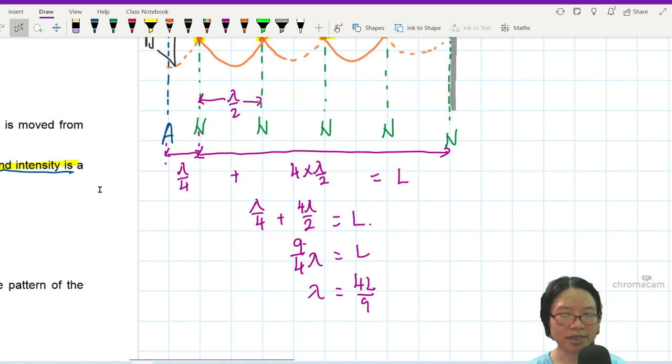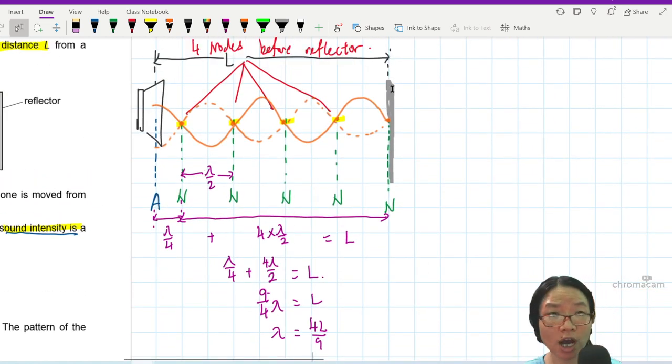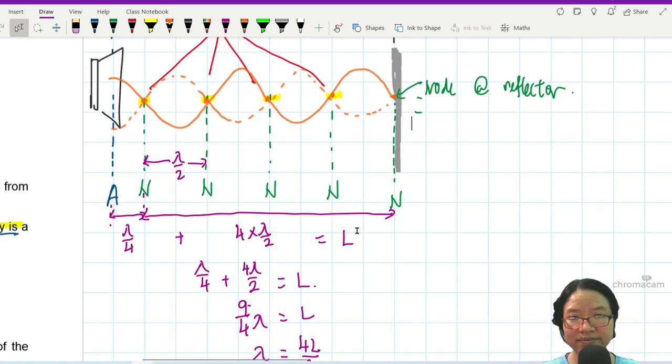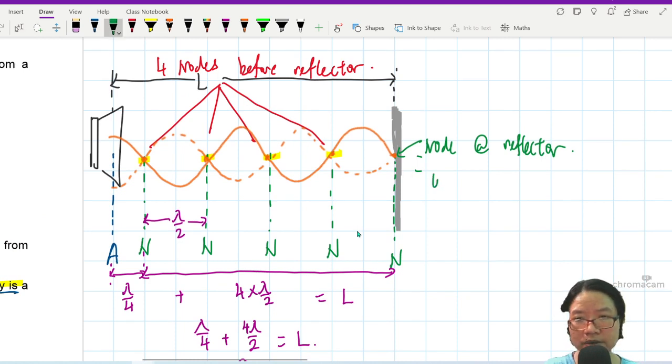Yeah. So the whole idea is, whenever you do standing wave question, sketch out the pattern by reading the question carefully. The first clue that the question have given you is, at the loudspeaker, you will get an anti-node. And then as you move towards the reflector, you will get 1, 2, 3, 4. 4 nodes. And you can draw them in. And you also know that by the time you reach the reflector, you will get another node. Note at the reflector. Why? Because there's less space to move. Less movement.